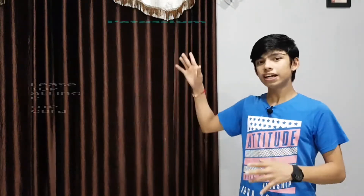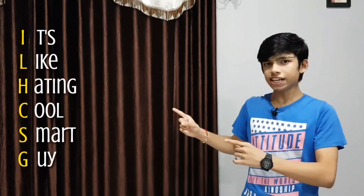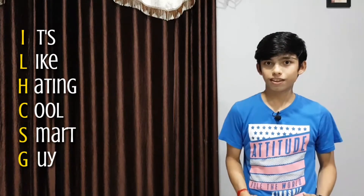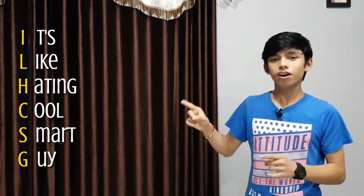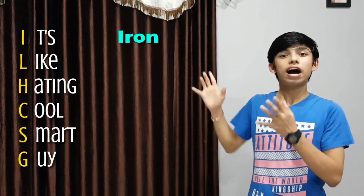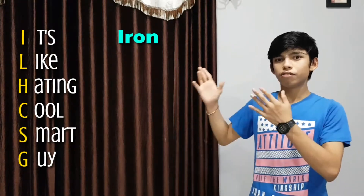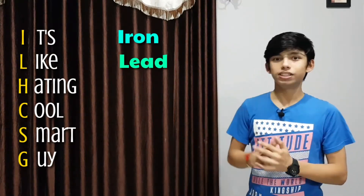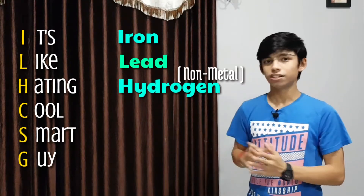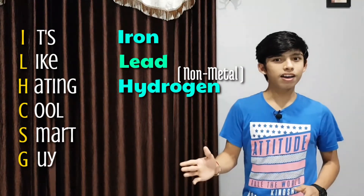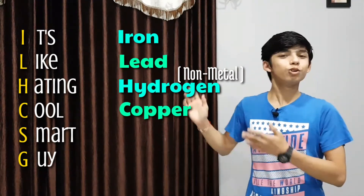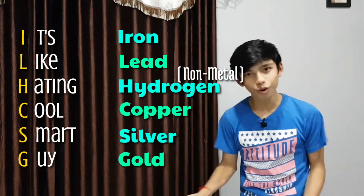Now let's change to the next phrase: 'It's Like Hating Cool Smart Guy.' So now we have I — iron from I. Then we have L — so we have lead. Then hydrogen. Then 'cool smart guy' — yes, copper, silver, and gold.